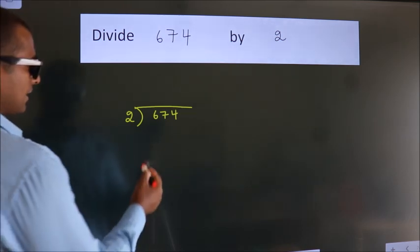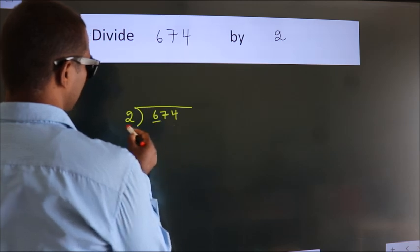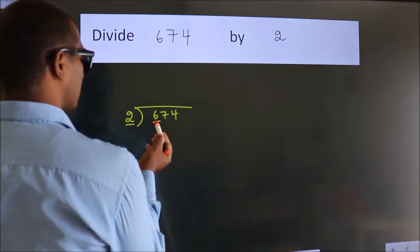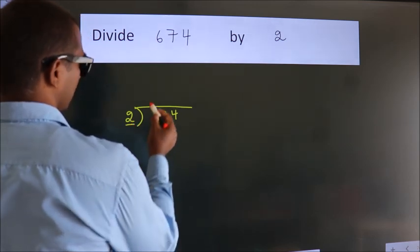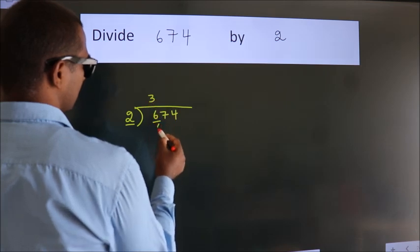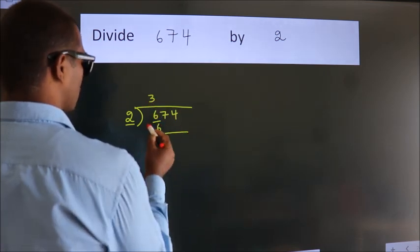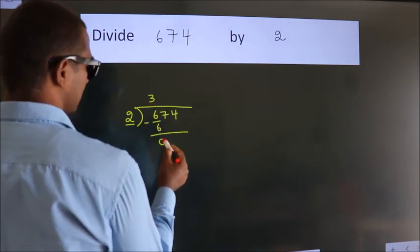Next. Here we have 6, here 2. When do we get 6 in the 2 table? 2 times 3 is 6. Now we subtract and we get 0.